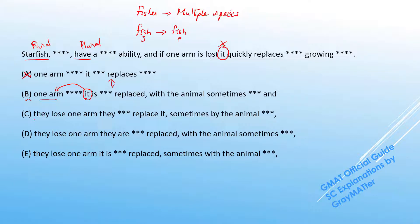Now in C, they lose one arm, they replace it. The two they are referring back to starfish itself and the it is referring to the arm. So all of this works. We can hold on to C.